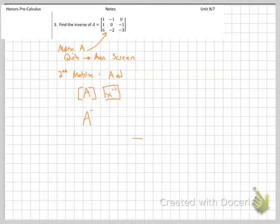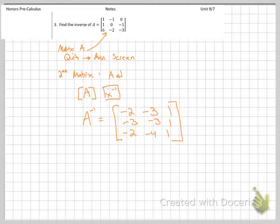So if you did all of this right, A inverse should equal negative 2, negative 3, 1, negative 3, negative 3, 1, negative 2, negative 4, 1. So if you typed it all in carefully, your calculator will give you the inverse.